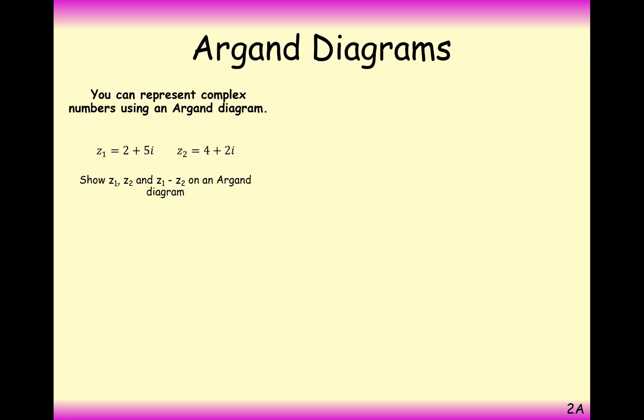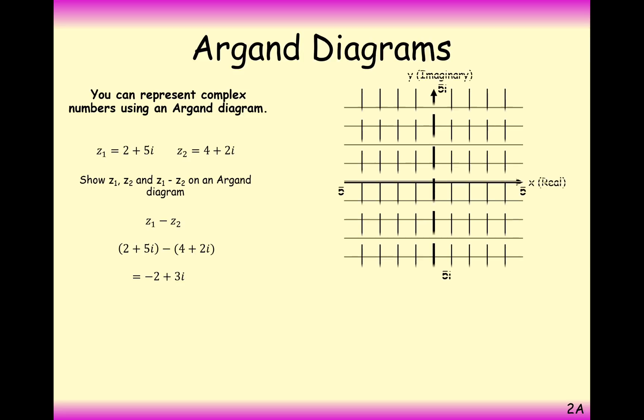Very similar question here then. Show z1, z2, and z1 minus z2 on an Argand diagram here. So let's first work out what z1 minus z2 is. So take the real parts away and the imaginary parts away. We get minus 2 plus 3i.